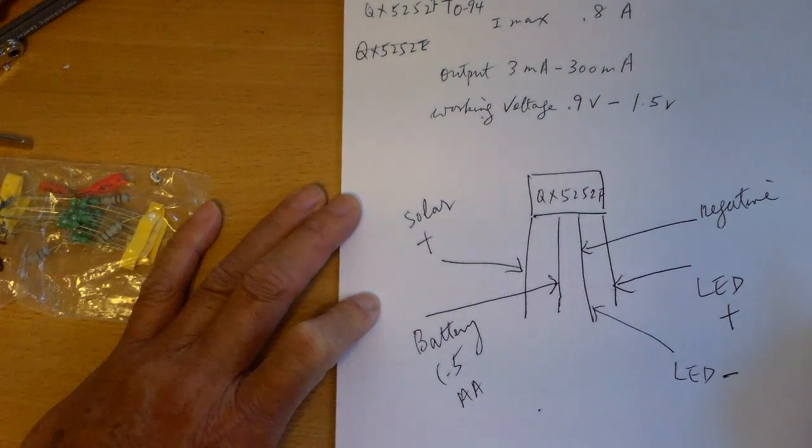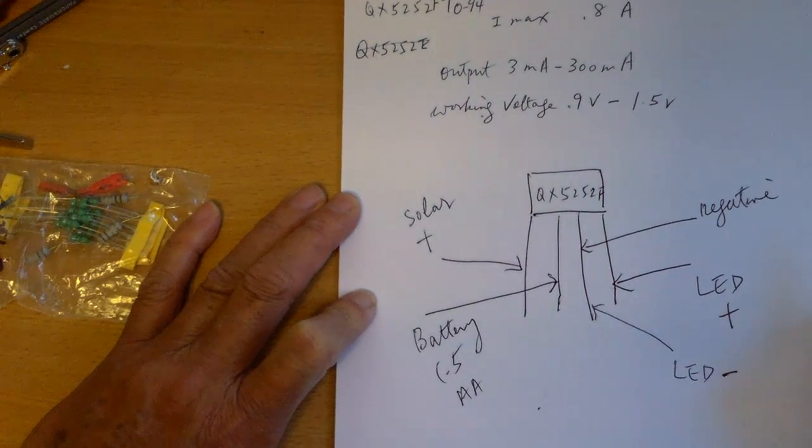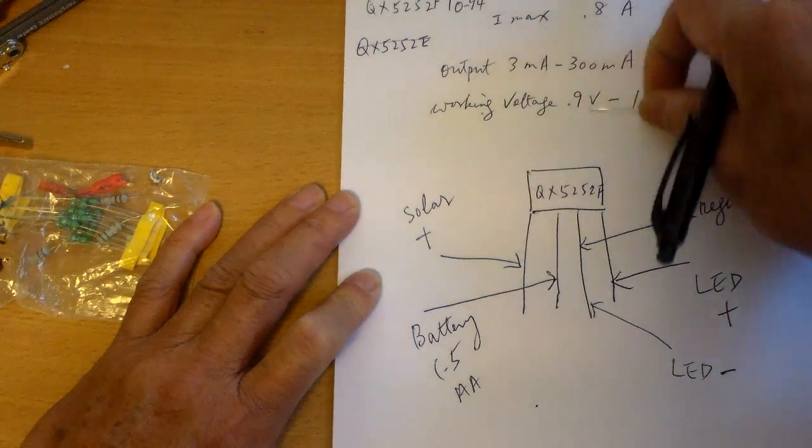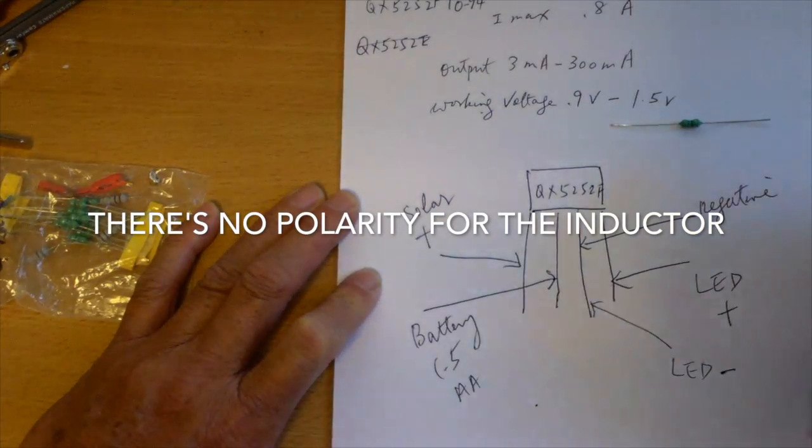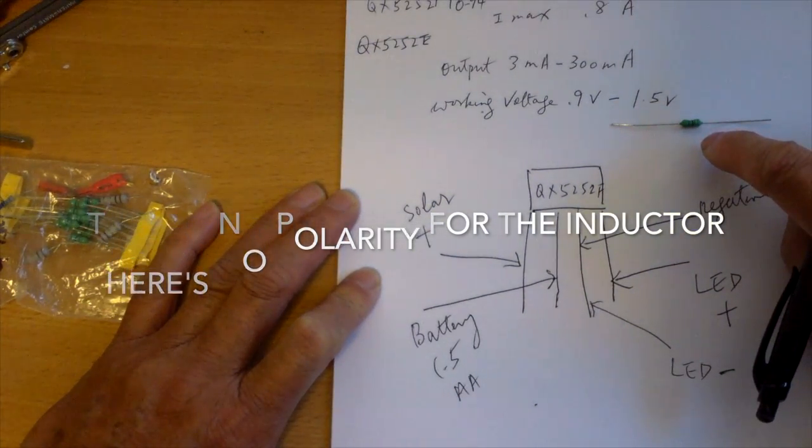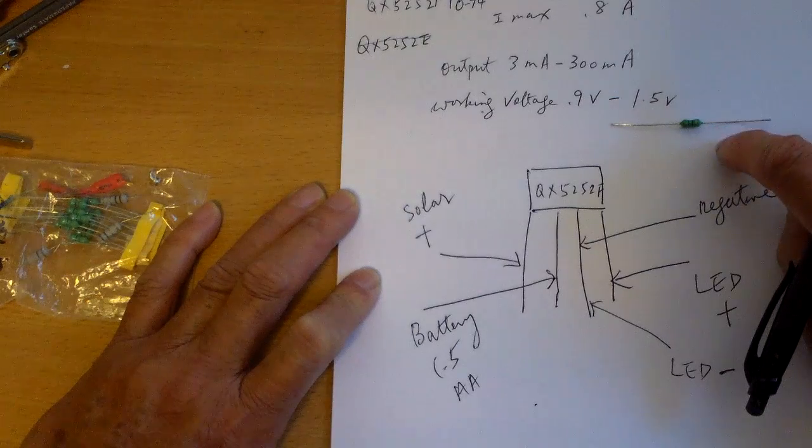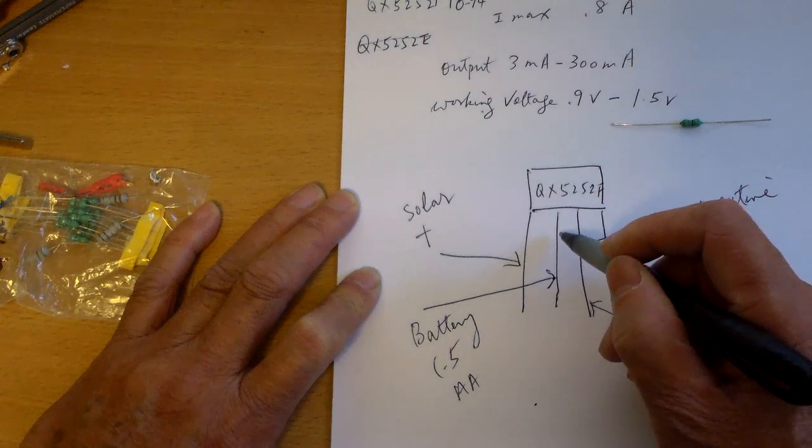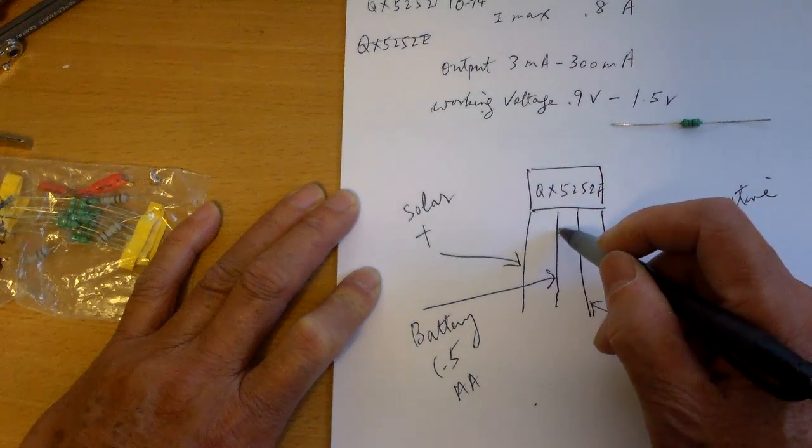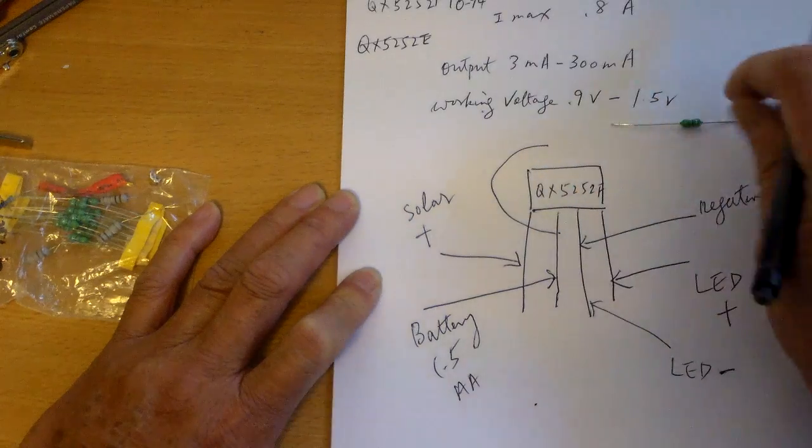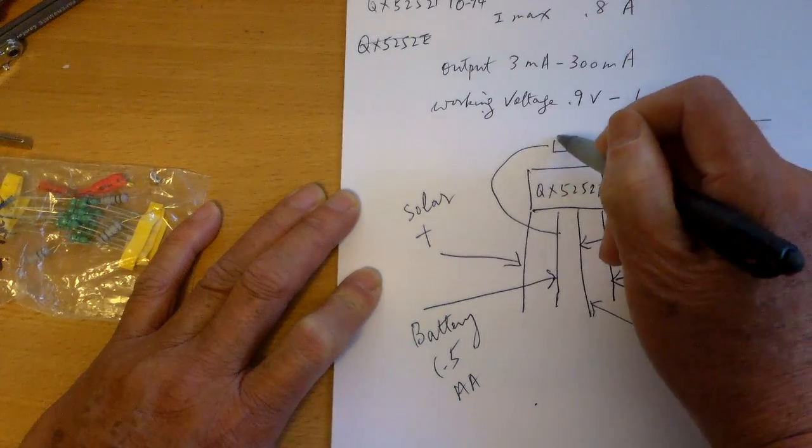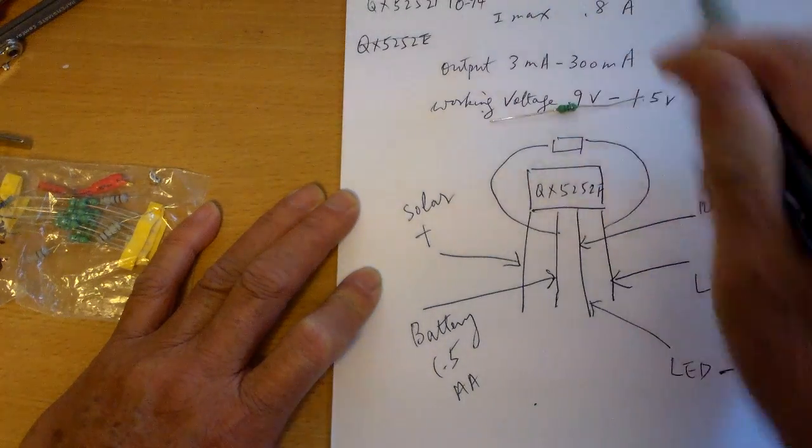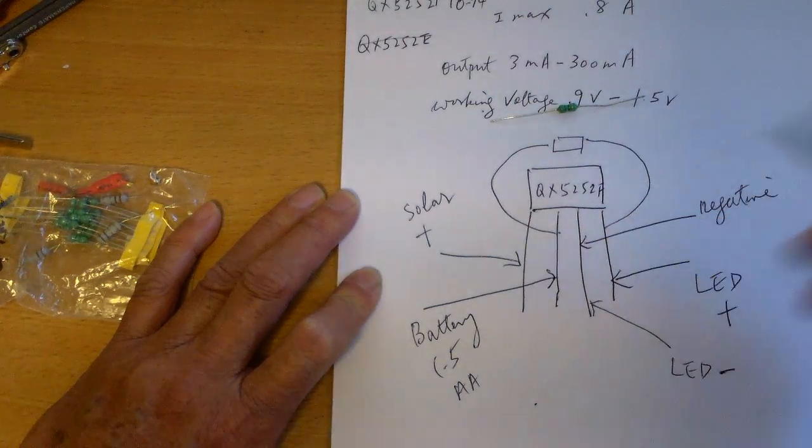You need one more thing, or actually two more. You need an inductor like this. This one is a 47 micro henry. You can try different ones, and you connect them to two and four. So that's your inductor here. You connect it to the second leg and the fourth leg.